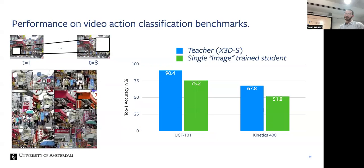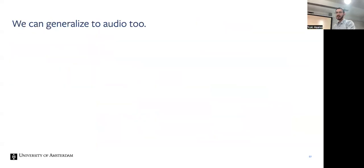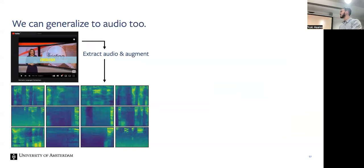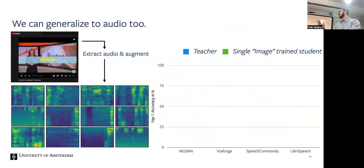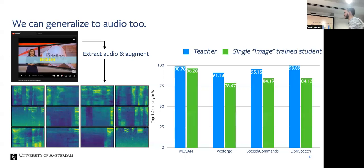You can also generalize this to audio. You simply apply not color jitter or rotations as augmentations but augmentations in the audio space, like adding some random noises and pitch shifts and stuff like that. And here we also get like decent performance. In this case, for example LibriSpeech, you know, which one, Speech Commands or VoxForge, I think their classification to 100 classes. And so getting 84% top-1 accuracy is not too bad.